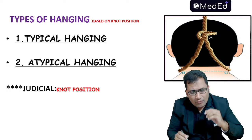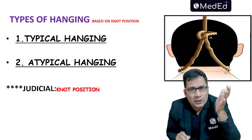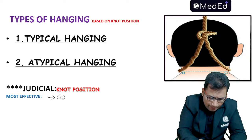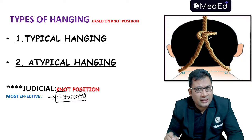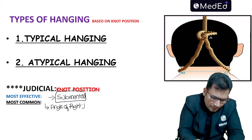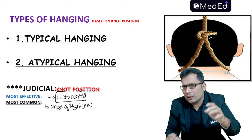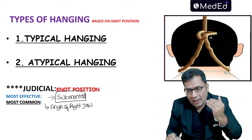Now here is a question: what is the knot position in case of judicial hanging? The most effective position in judicial hanging is the submental position — below the chin. The most common position in India is the angle of the right jaw. To summarize: typical hanging — nape of the neck; atypical hanging — any other position; judicial hanging most effective — below the chin; most common in India — angle of the right jaw.